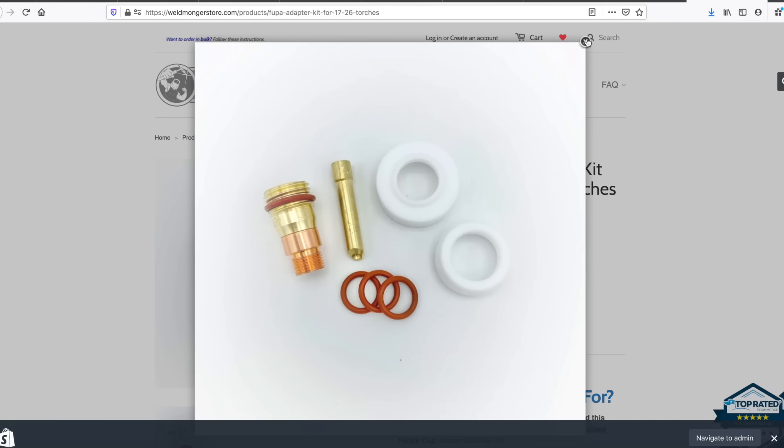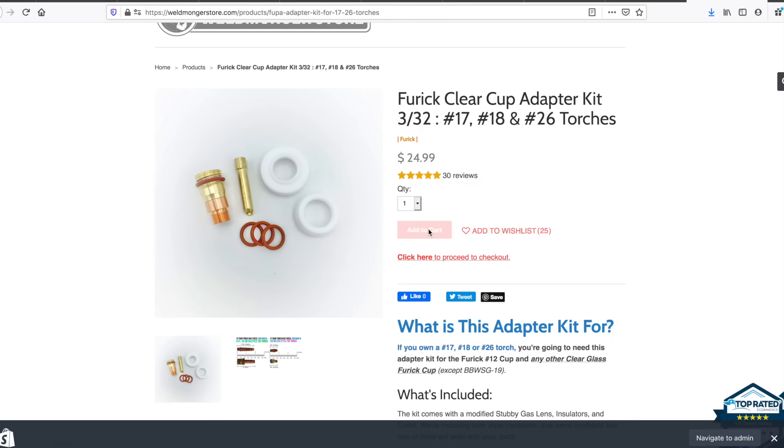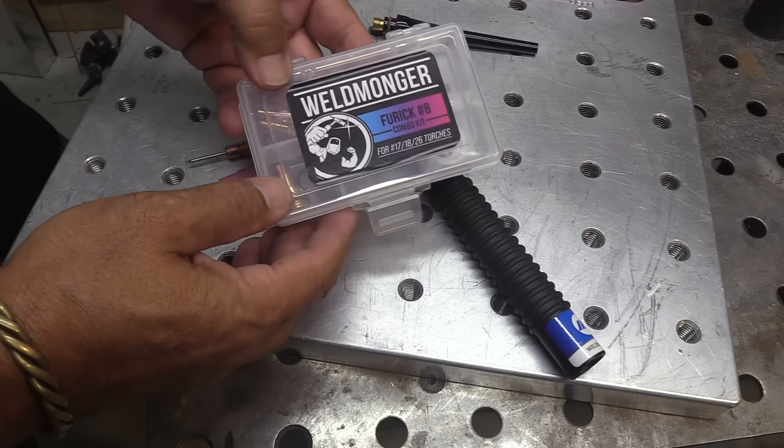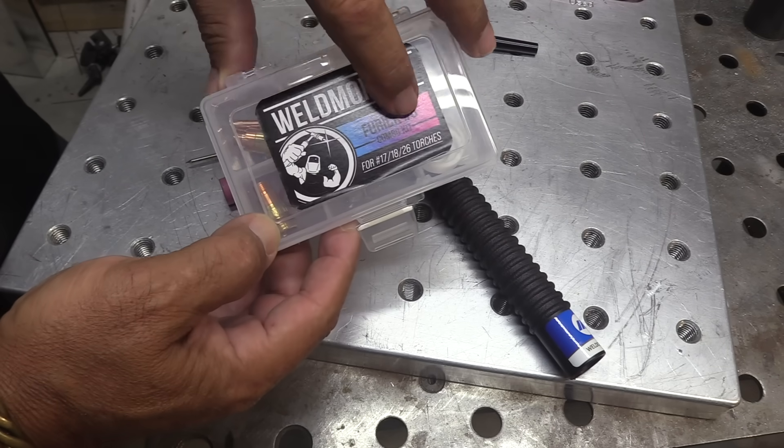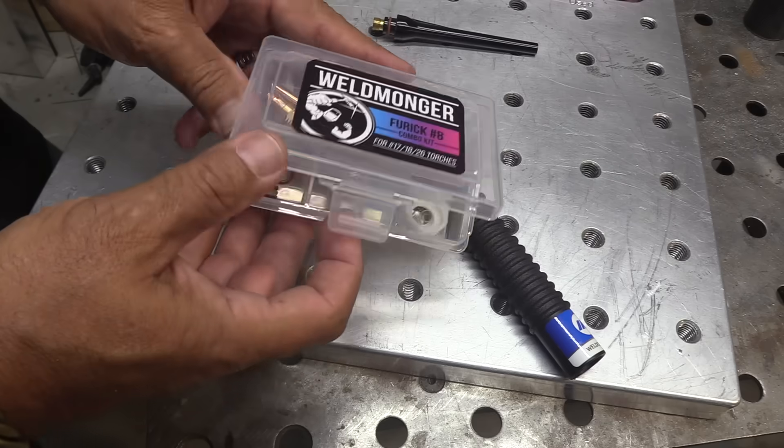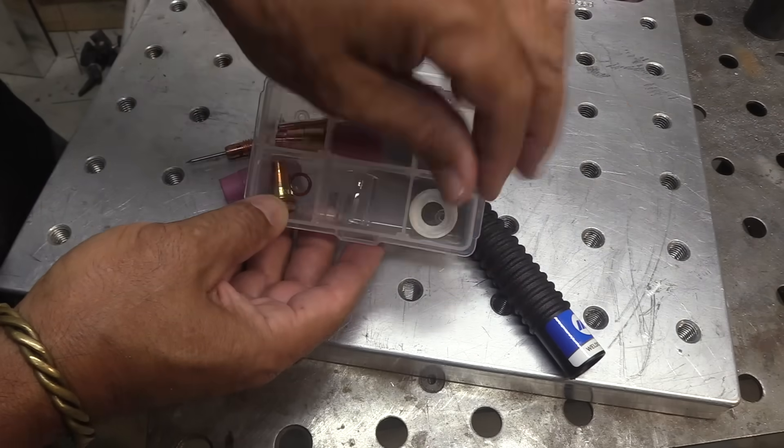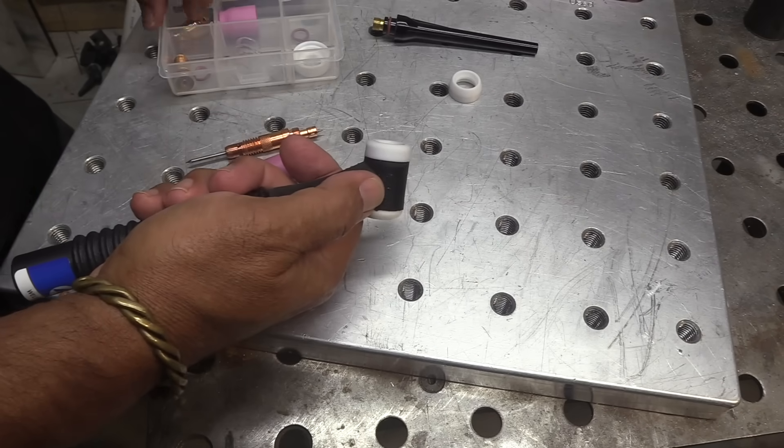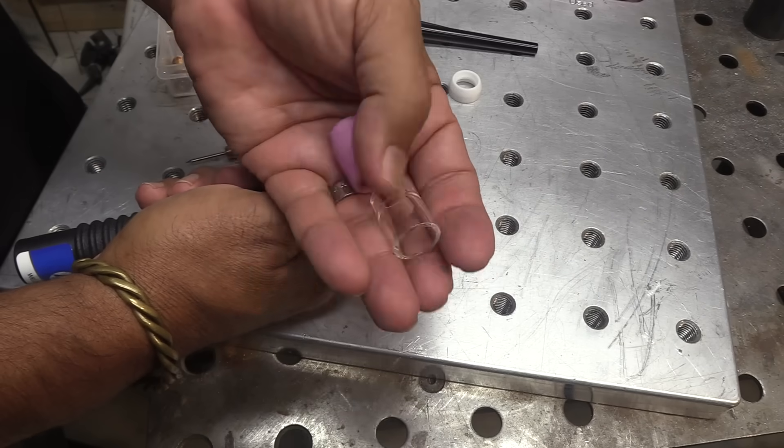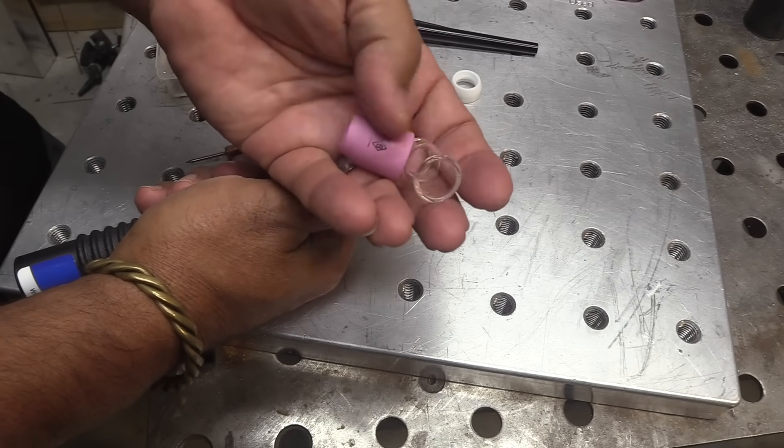There are other ways also, and I'll show you that in just a second. One of the better deals to make that Jazzy work is get this Furic 8 combo kit. Then you'll also have a clear 8 and a ceramic 8 along with all the rest of the hardware to make everything work, and the Jazzy 10 will work with this kit also.